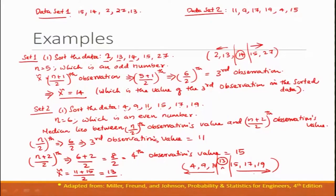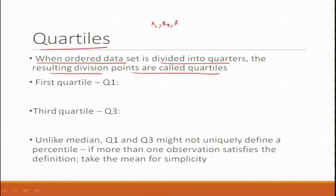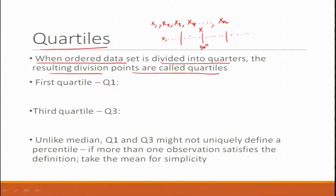Once you know how to calculate the median, we can do many more things. Let us talk about the concept of quartiles. When the ordered dataset is divided into quarters, the resulting division points are called quartiles.